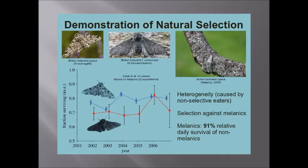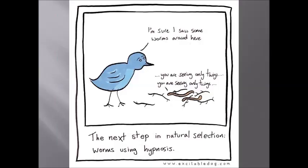Darwin observed that there were lots of variability among members in the same location. He predicted that if the environment changed, only a certain variation of organisms would survive.